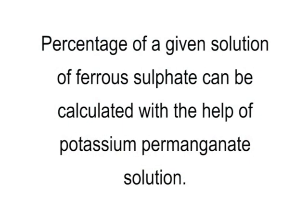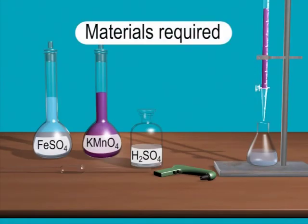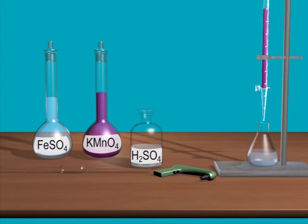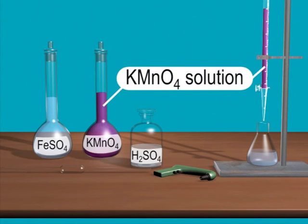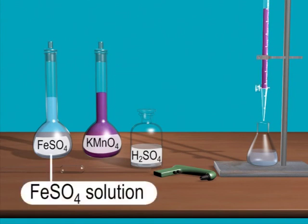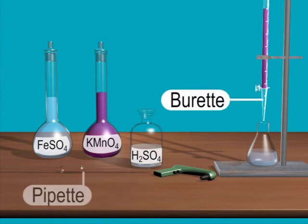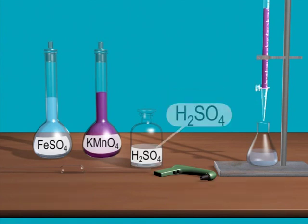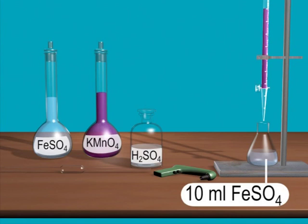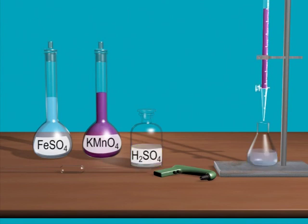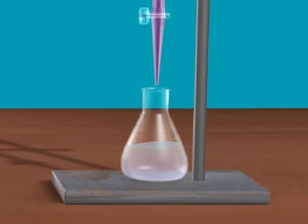The percentage of a given ferrous sulfate solution can be calculated using potassium permanganate solution by the titration method. Materials required: potassium permanganate solution of known strength, ferrous sulfate solution of unknown strength, burette, pipette, conical flask and sulfuric acid. Take 10 mL of ferrous sulfate solution in the conical flask using a pipette, add some sulfuric acid, then add potassium permanganate solution drop by drop from the burette.